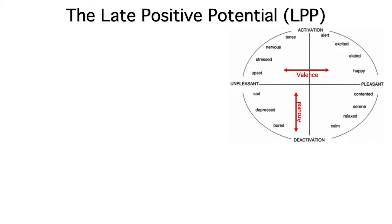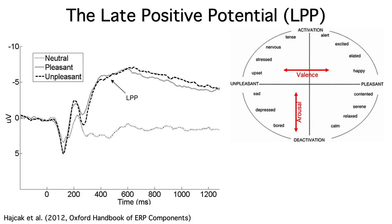As you probably know, emotion has two main dimensions, arousal and valence. Arousal is the intensity of the emotional response, and valence is whether it's positive or negative. The LPP primarily reflects arousal and not valence.